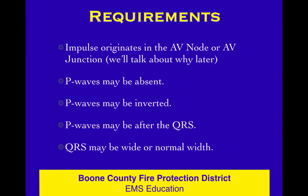The requirement for a junctional rhythm is that the impulse comes out of the node or the junction. It didn't come out of the SA node. You may or may not have P-waves. If you have P-waves, they may be inverted. If you have P-waves, they may be before or after the QRS. The QRS can be wide or may be normal. It didn't really narrow it down much for you there, did it?